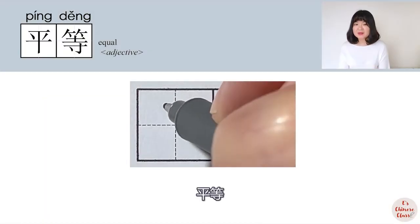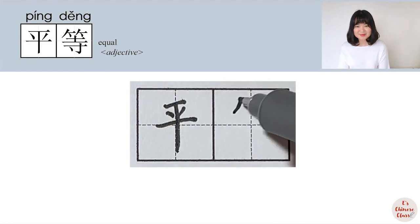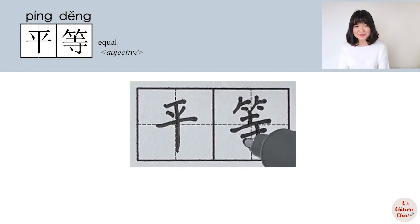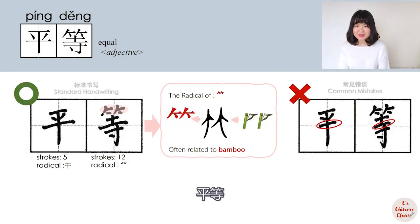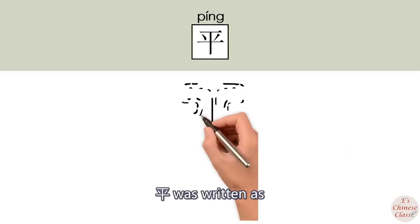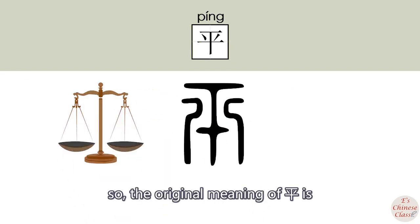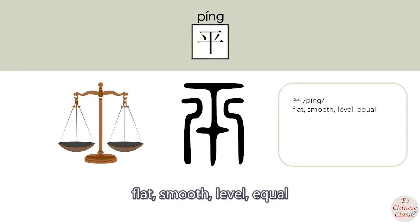平等. In ancient times, 平 was written as scales. So the original meaning of 平 is flat, smooth, level, equal.